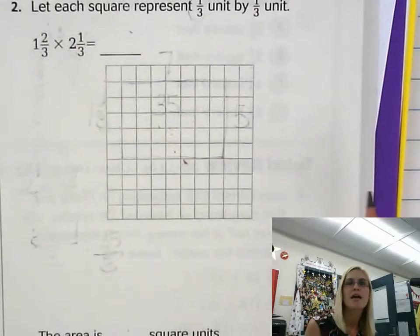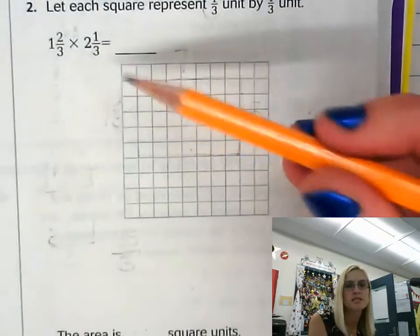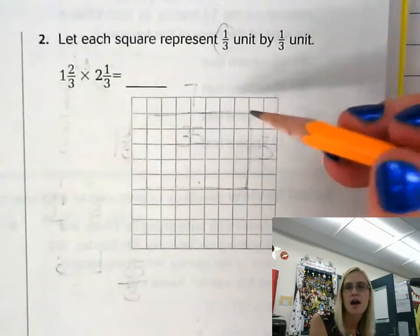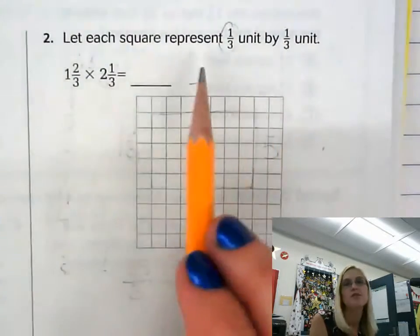So today we're going to be multiplying a mixed number times a mixed number, and we're actually going to be using it with tiles, and those tiles are not representative of one unit, they're actually representative of whatever it's telling you.